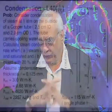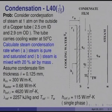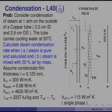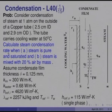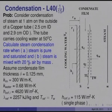Let us take the first problem of condensation. Consider condensation of steam at one atmosphere on the outside of a copper tube. Here is the symmetry line of the tube of radius r_i, and the wall thickness is r_o minus r_i, through which cooling water is flowing and the steam is on the outside. The tube is made of copper, with 2.5 cm inner diameter and 2.9 cm outer diameter, carrying cooling water at 50°C. Calculate the steam condensation rate when: (a) steam is pure and saturated, and (b) steam is mixed with 20 percent air by mass. When steam is mixed with air, the condensation rate reduces and we must estimate how much.